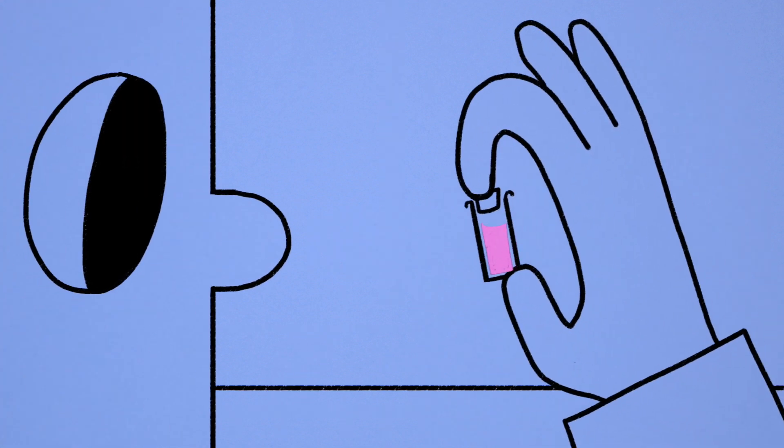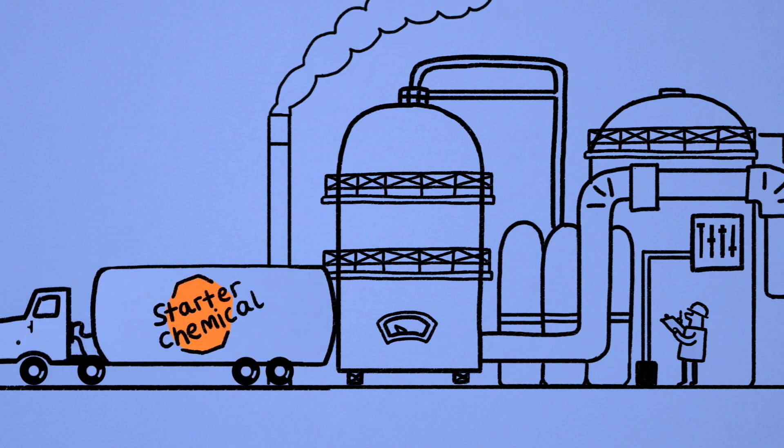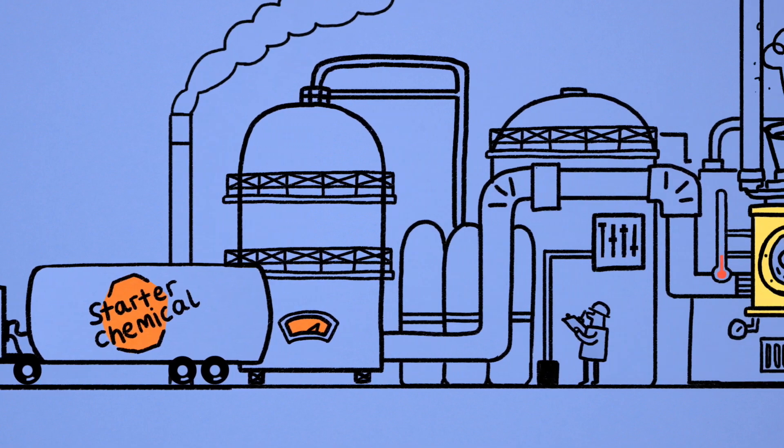That's why chemists aim to replicate natural chemicals in their laboratories. They take a starter chemical that is abundant in supply, then work out how to turn it into the chemical product they need.